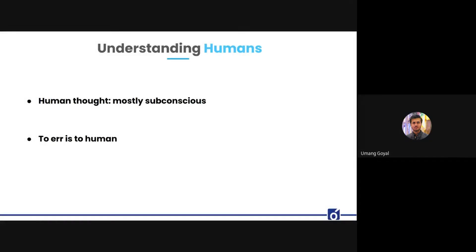Don Norman strictly tells every product developer or designer to keep in mind that human thoughts are mostly subconscious. Humans don't even know why they choose what they choose or why they act the way they do, because it happens in a split second. It acts upon past experiences and things learned over time. Designers should leverage this subconscious behavior and design systems accordingly.